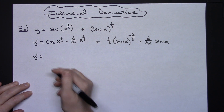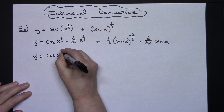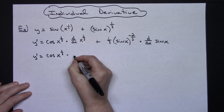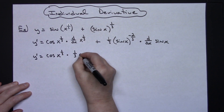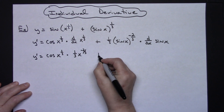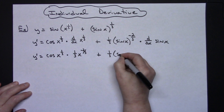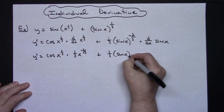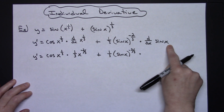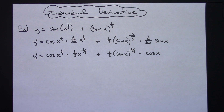In the next line, I'm going to compute the two remaining derivatives. For the first term: cosine of x to the 1/3rd, times 1/3rd x to the negative 2/3rds. For the second term, leaving the 1/3rd sine x to the negative 2/3rds alone, the derivative of sine is cosine x.